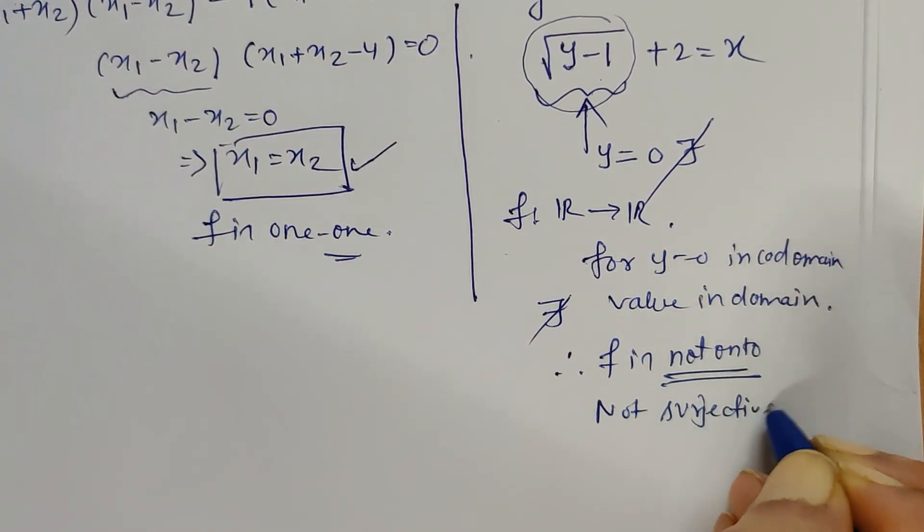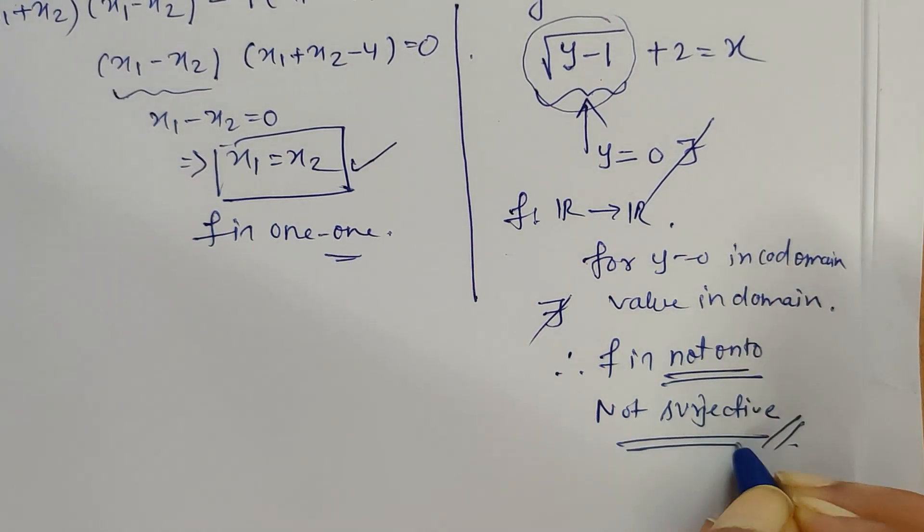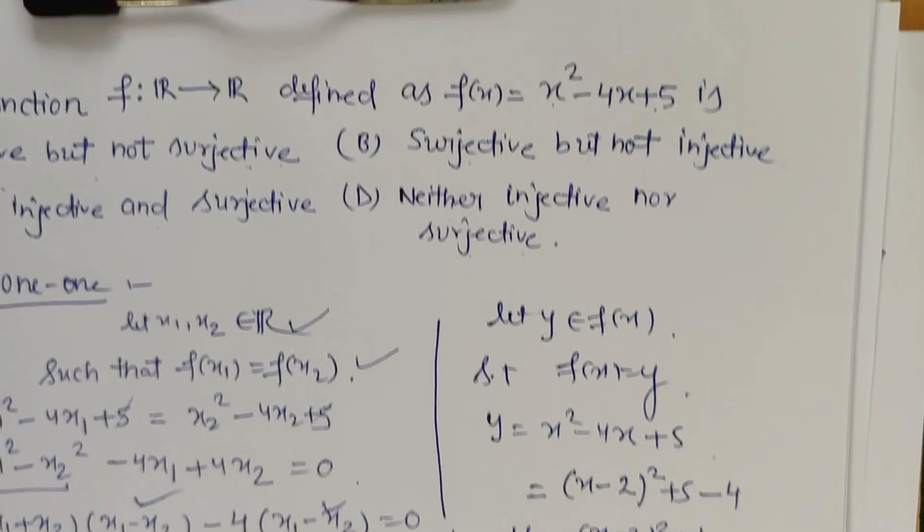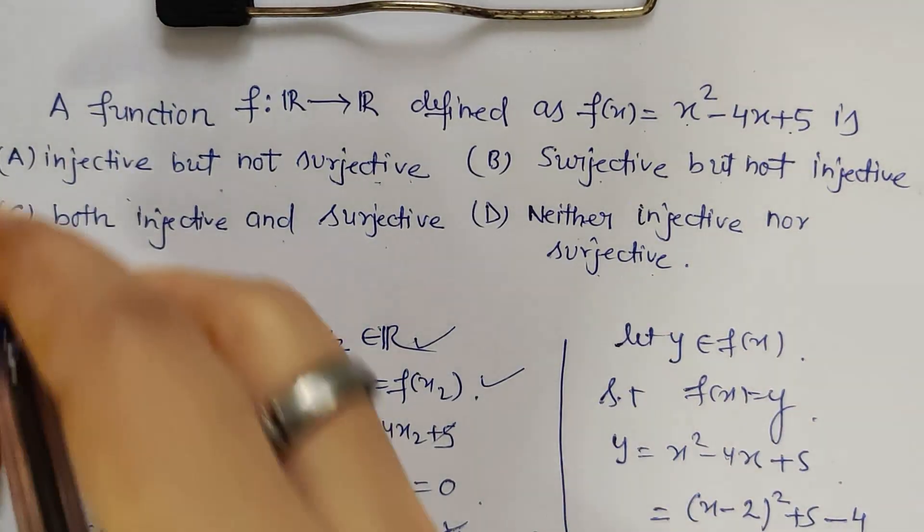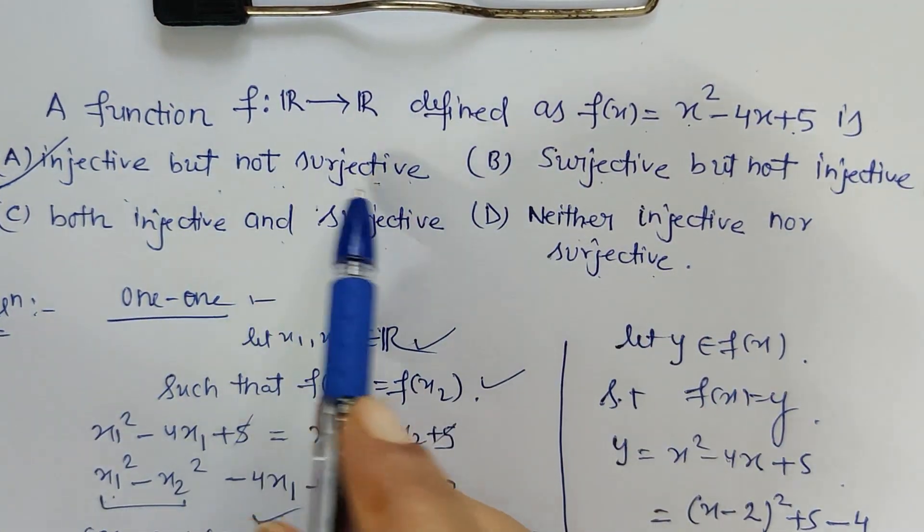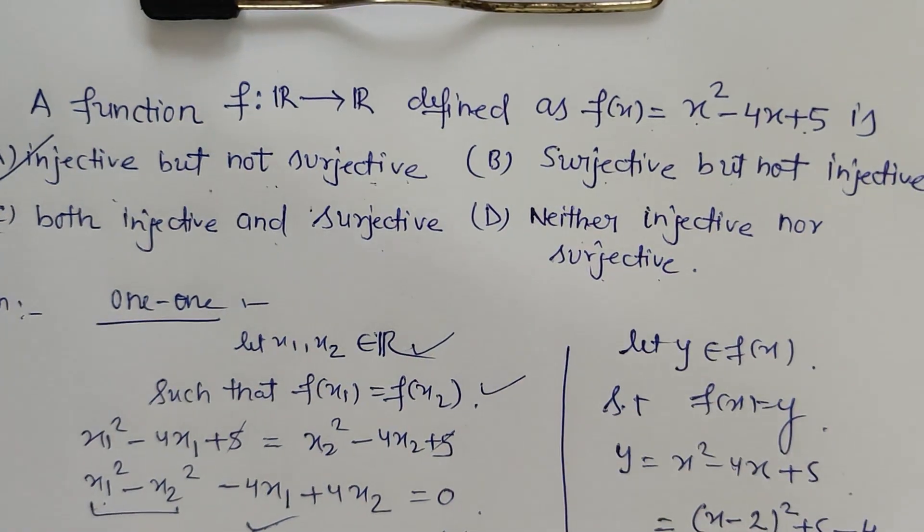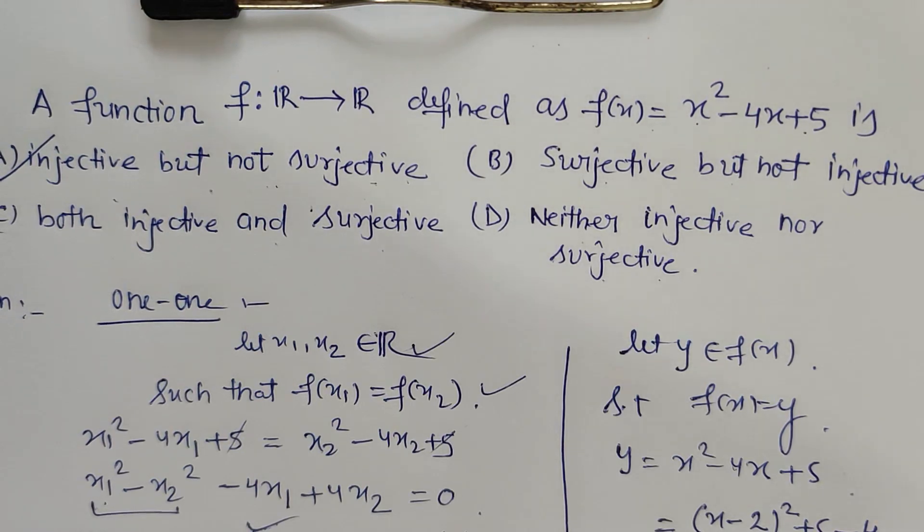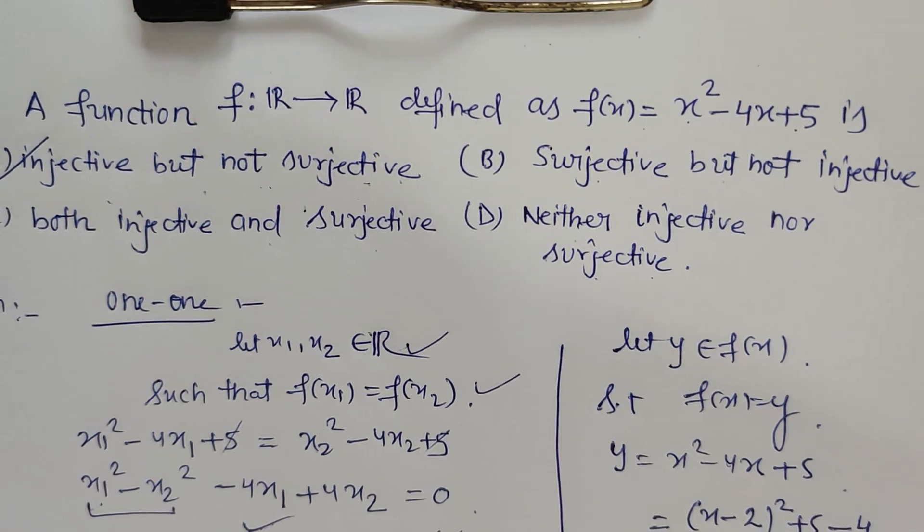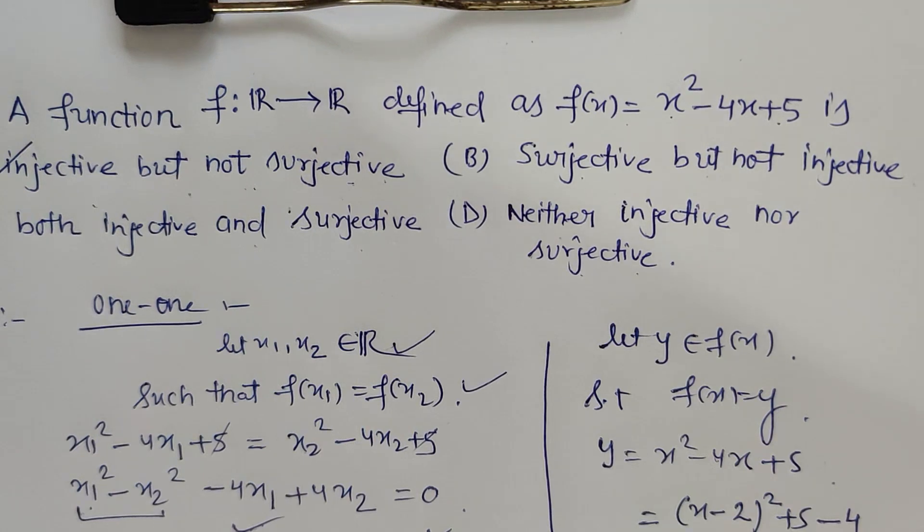Hope this proof is clear to everyone. The correct option is option A: it is injective but not surjective. I hope the problem is clear to everyone. You can watch my previous videos for getting more clarity on how to prove onto function and not onto function. There are problems published on the channel. Thank you.